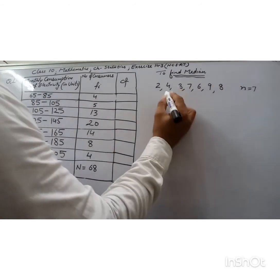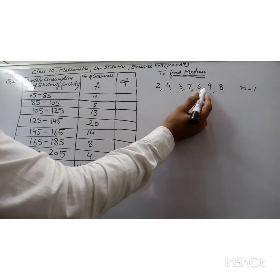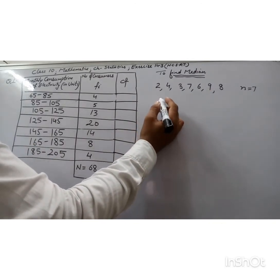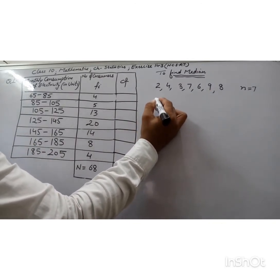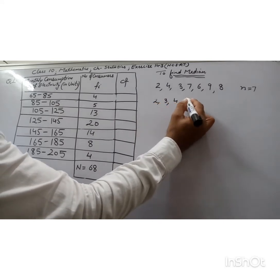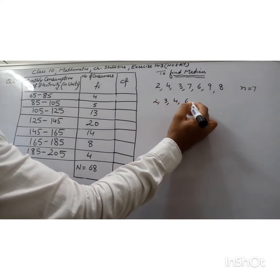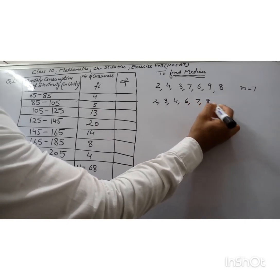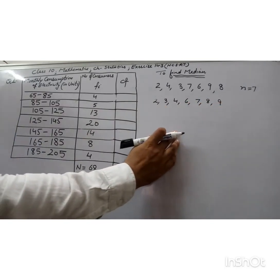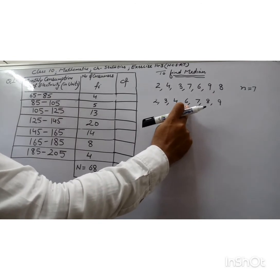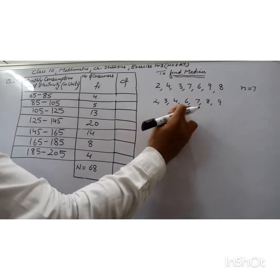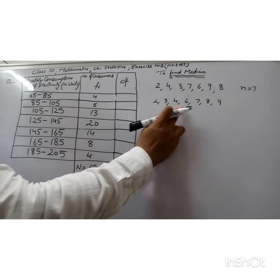The marks are 2, 4, 3, 7, 6, 9, 8. To find the median, first of all we will arrange these marks in ascending order. So it becomes 2, 3, 4, 6, 7, 8, and 9. We can see here that 6 is the middlemost observation because on both sides of 6 there are 3 observations.